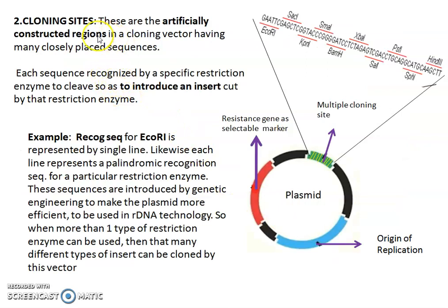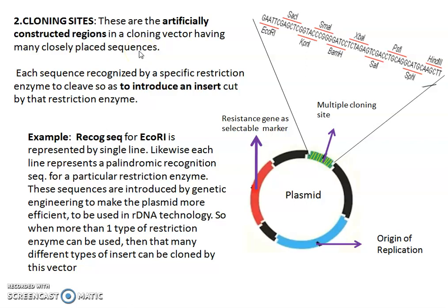The second feature of a cloning vector is cloning sites — areas of an artificially designed vector where you can introduce the gene of interest. To understand this, you should be very clear with the types of restriction enzymes and which sequence each restriction enzyme identifies. You can refer to the restriction enzyme video for that. The cloning site has many closely placed sequences, and which enzyme recognizes which specific sequence should be clear to understand this.